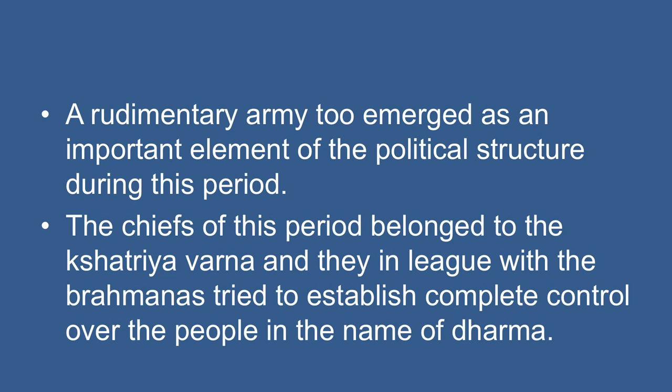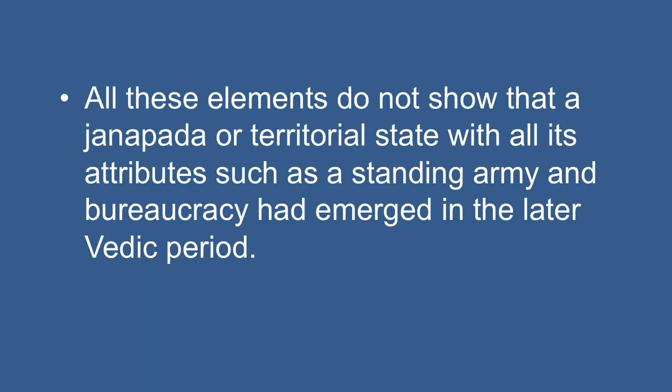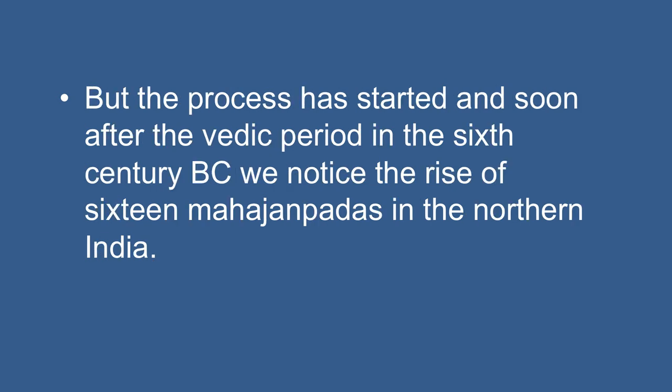A rudimentary army also emerged as an important element of the political structure. The chiefs and their officials lived on taxes called Bali, Shulka, and Bhaga offered by the people. The chiefs of this period belonged to the Kshatriya Varna, and they, in league with Brahmins, tried to establish complete control over the people in the name of Dharma. However, all these elements do not show that a Janapada or territorial state with a standing army and bureaucracy had fully emerged in the later Vedic period. But the process had started, and soon after the Vedic period in the 6th century BC, we notice the rise of Mahajanapadas in North India.